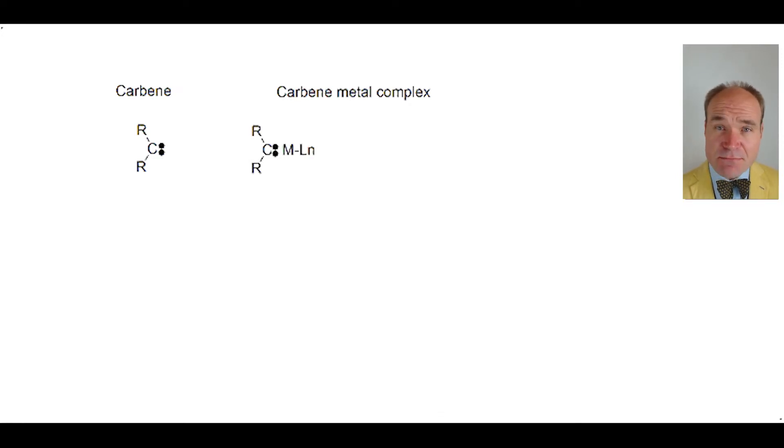This is where the carbene and the metal create a double bond between each other. There are two forms of carbene metal complexes. One has a partially positive charge on the carbon and the metal is partially negative. This is called a Fischer carbene complex. It's found where the metal is of lower oxidation state.